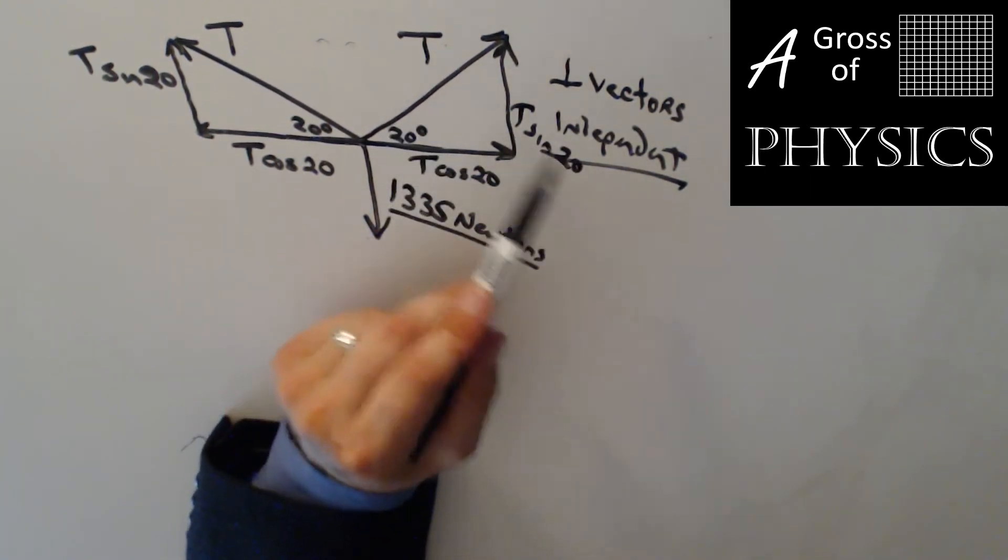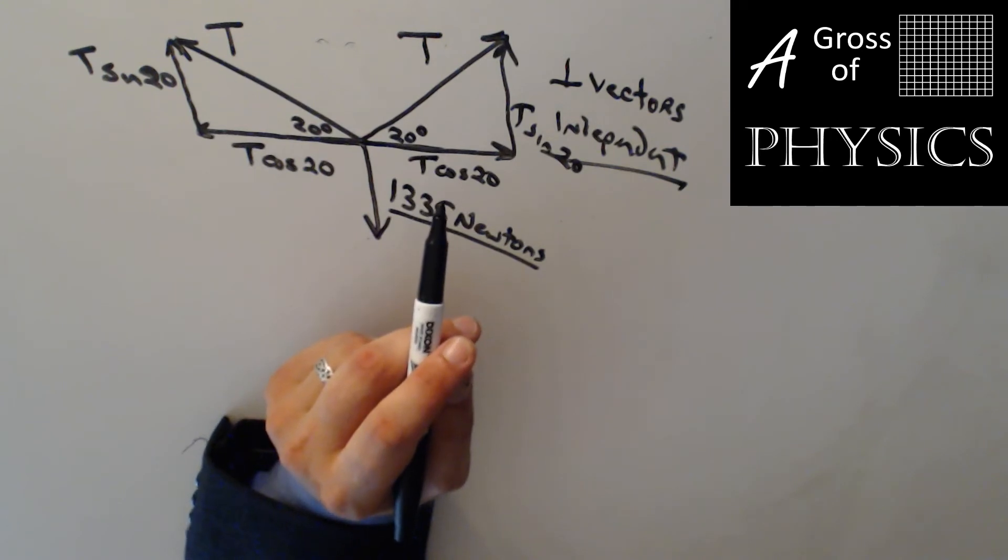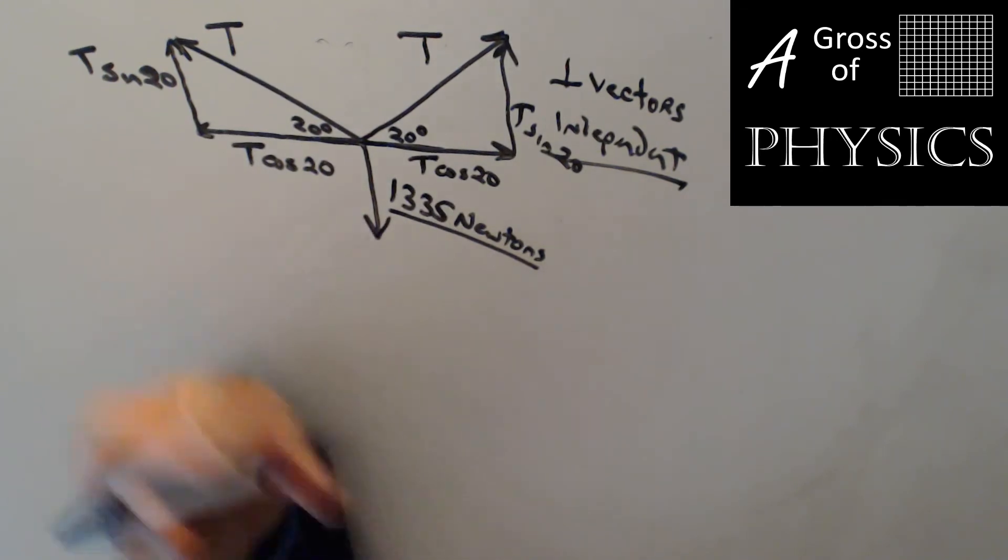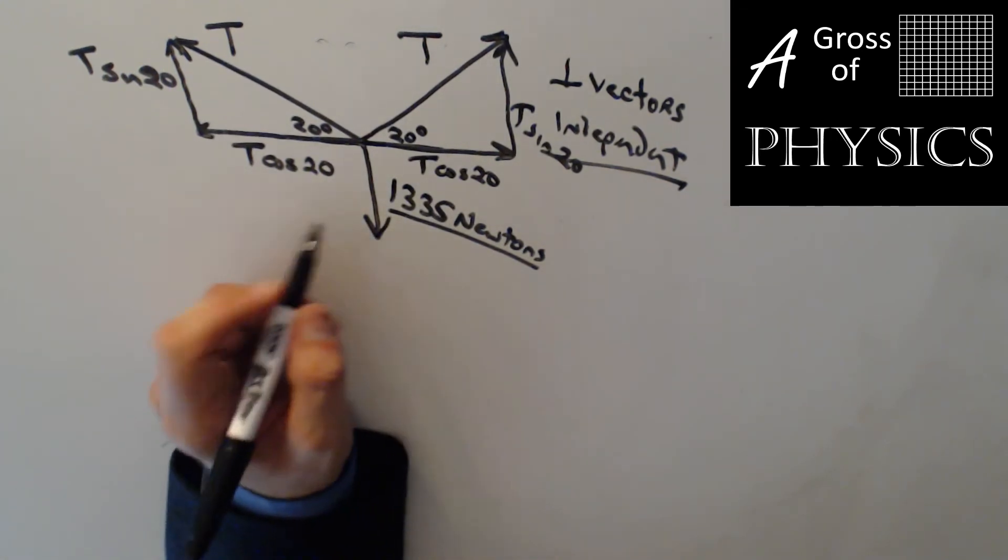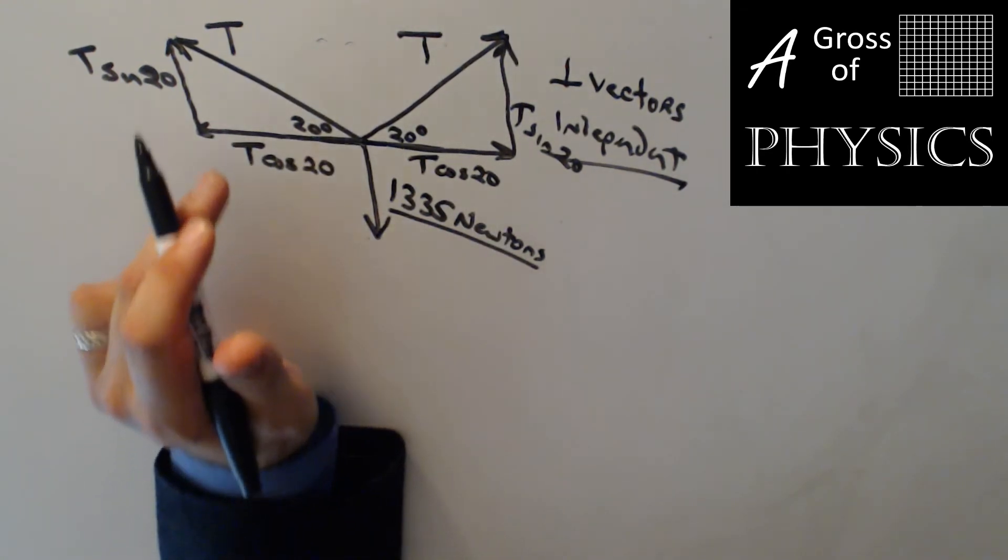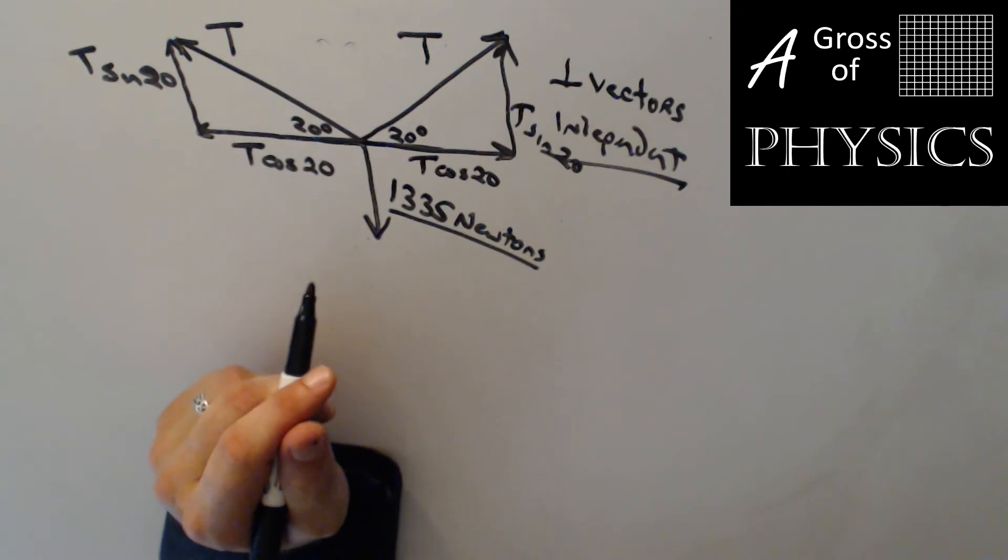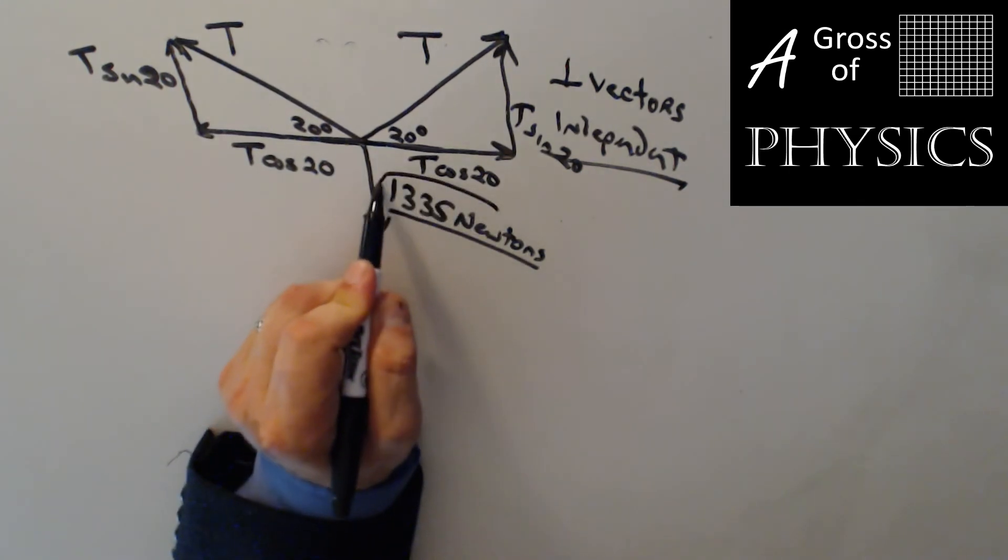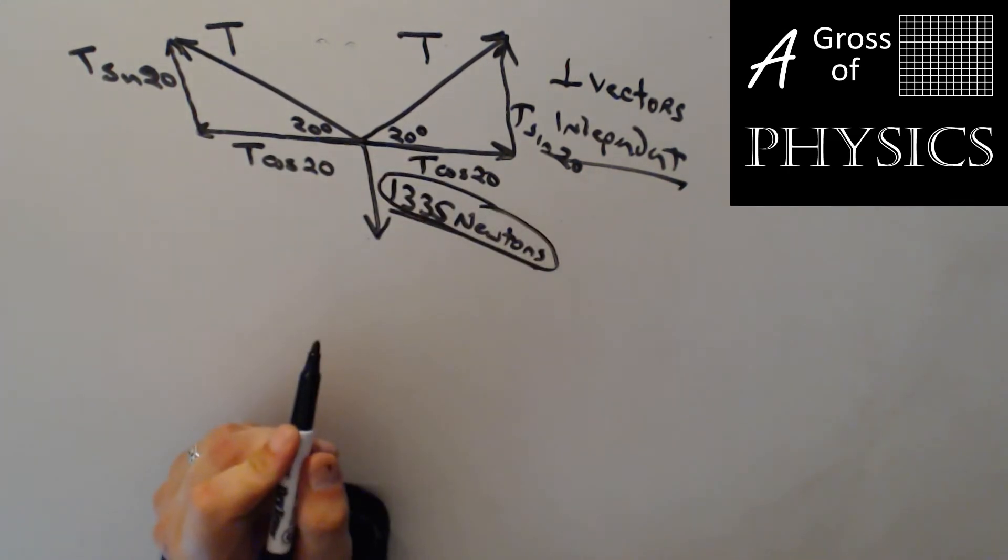If we knew the value for t we would calculate it. It would be a number whatever the number is times the sine of 20. But we don't know it. So at this point we have two vectors pointing in the x direction. Two vectors pointing in the vertical y direction. And don't forget the bear is pointing down.